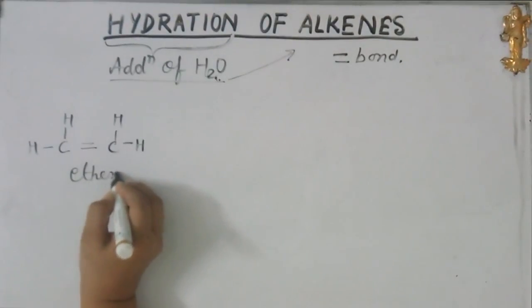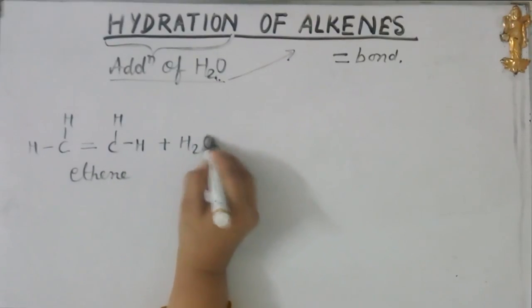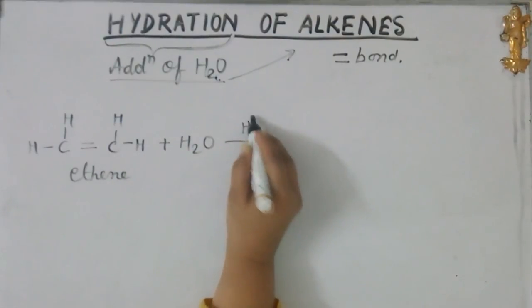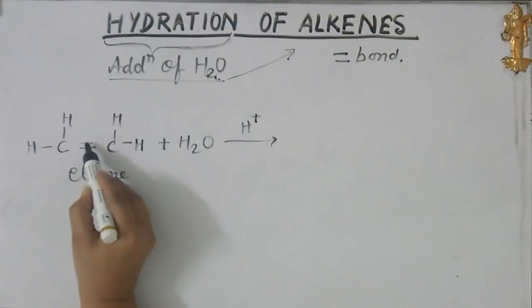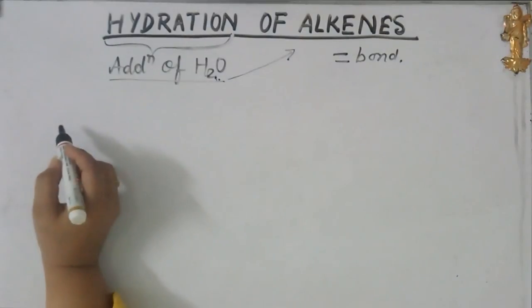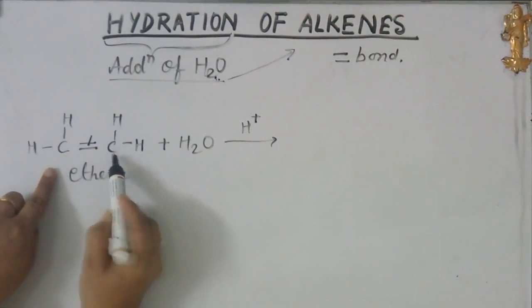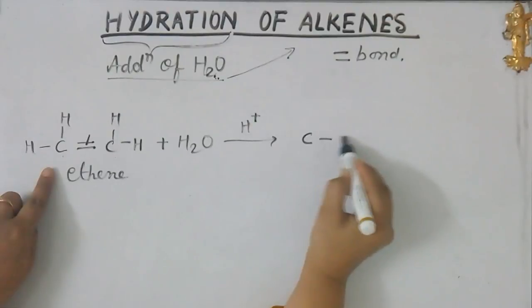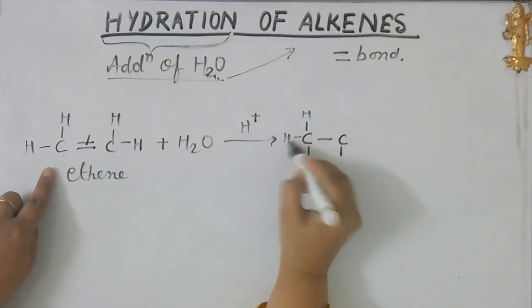I am adding water to this in the presence of H+ ion. What will happen? As I told you, this is the pi bond and this is sigma bond. The first bond is tightly held and the second bond is more sensitive towards addition reaction. So this bond will be broken down to create the valencies here and here. This double bond is now converted into two valencies and the other things will remain as such.